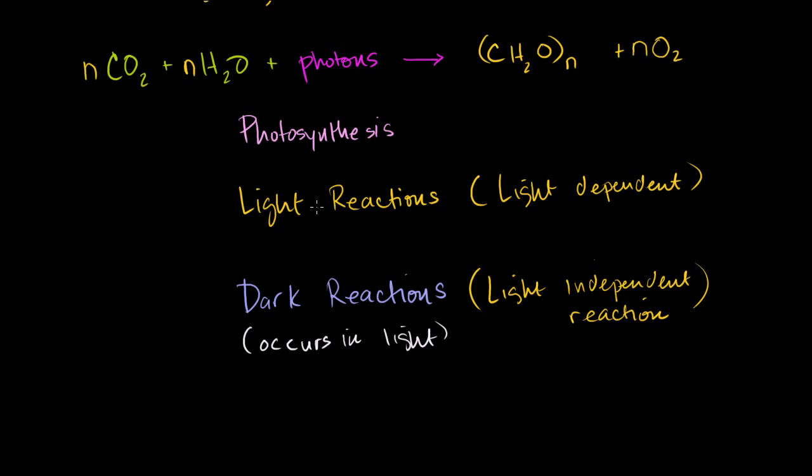So just to be clear, the light reactions actually need sunlight. They actually need photons for them to proceed. The dark reactions do not need photons for them to happen, although they do occur when the sun is out. They don't need those photons, but they need the byproducts from the light reaction to occur. So that's why it's called the light-independent reaction.